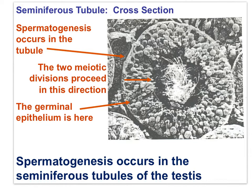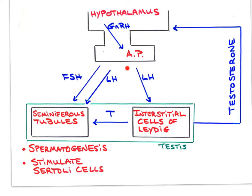Before looking closely at spermatogenesis, let's quickly review the role of testosterone — a review from Topic 6. The anterior pituitary releases FSH and LH, and yes, FSH and LH are found in males. Both FSH and LH target the testes. FSH and LH target the seminiferous tubules directly to stimulate spermatogenesis. LH also targets a cluster of cells within the testes known as the interstitial cells of Leydig, which manufacture and release testosterone. Testosterone also stimulates spermatogenesis. Testosterone feeds back to the hypothalamus to slow the release of FSH and LH — this is negative feedback control.